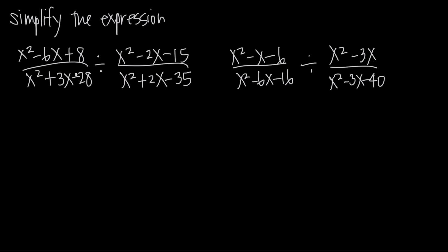It's simple — we turn it into a multiplication problem instead of a division problem. We've already talked about how to multiply rational expressions, so how do we change the division into multiplication? We just take the fraction that's being divided — the second one — and we flip it upside down. We take its reciprocal, making the numerator and denominator change places.